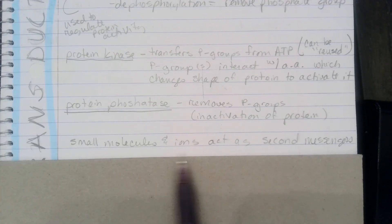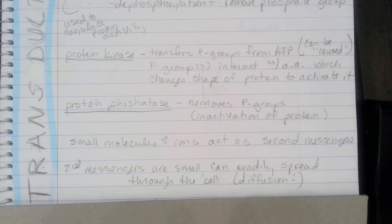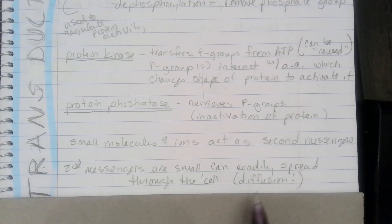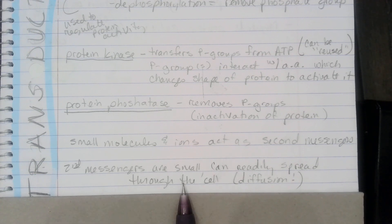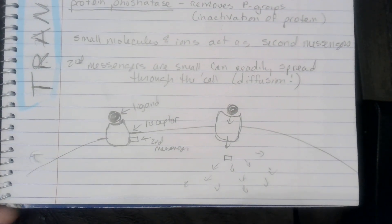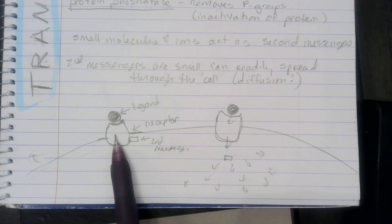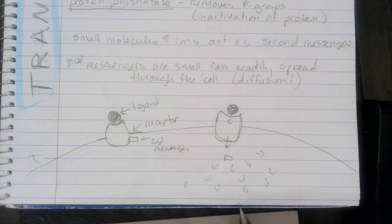Transduction also includes small molecules and ions that act as second messengers. Second messengers are small, so they can readily spread and diffuse throughout the cell. In the diagram, whenever that ligand bonds to the embedded protein in the cell membrane, it releases the second messenger, which then causes the phosphorylation cascade.